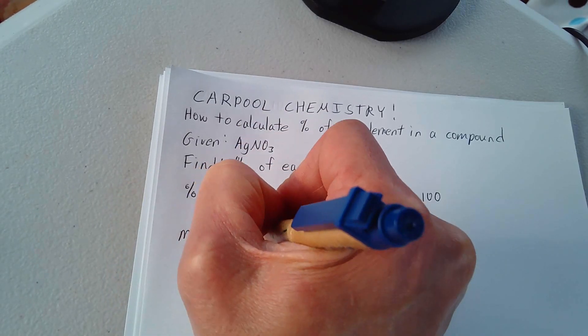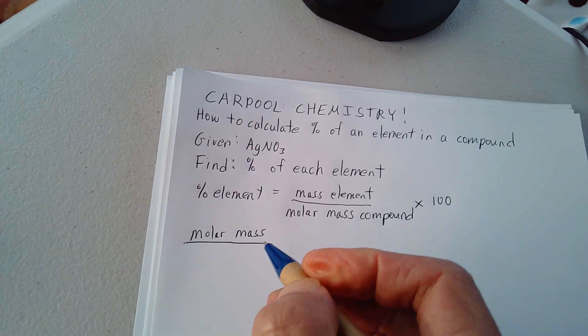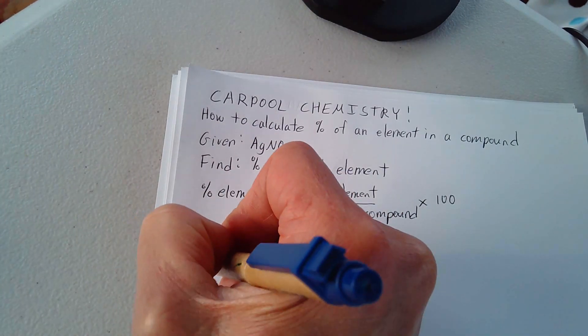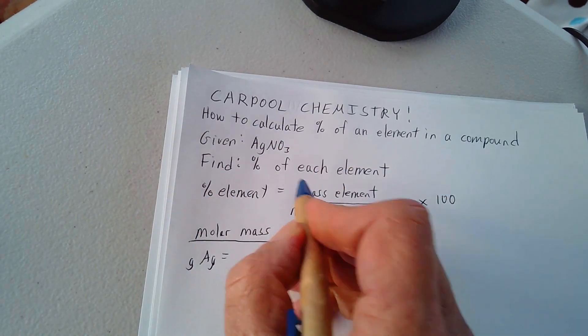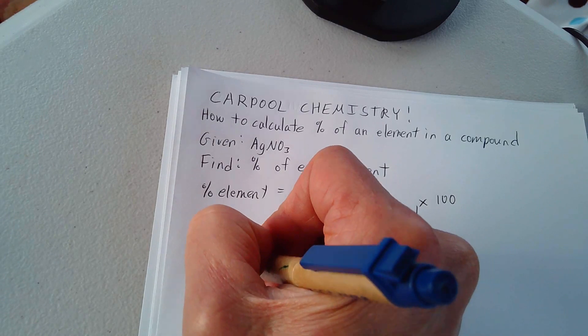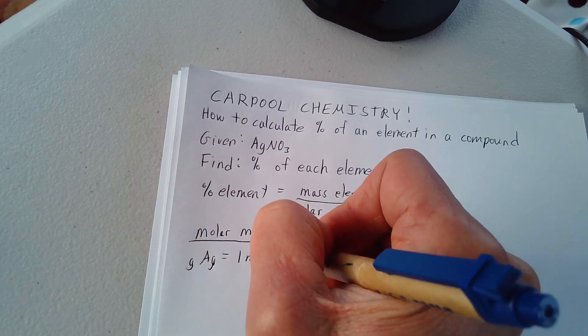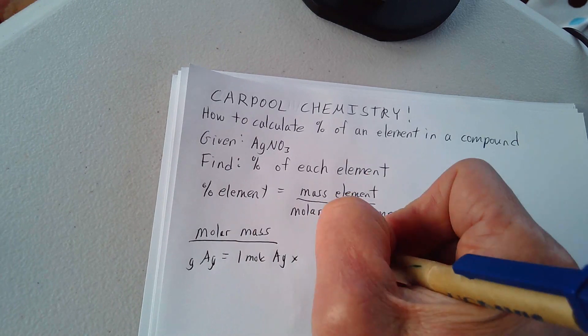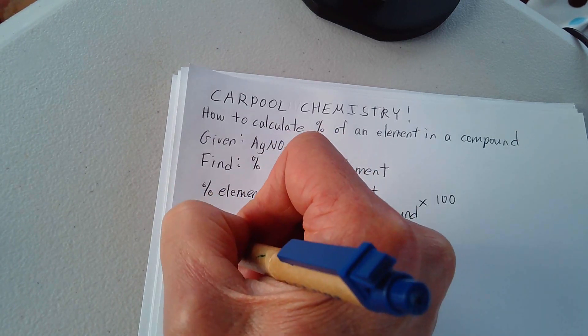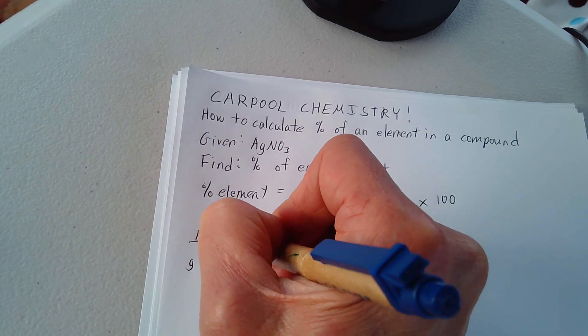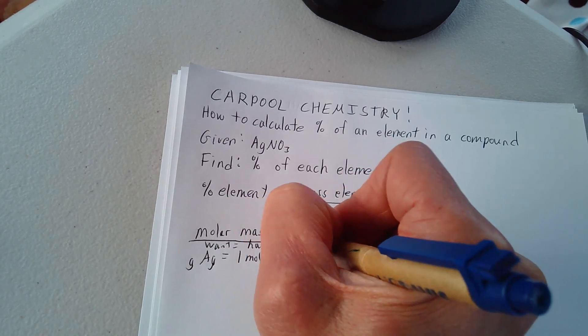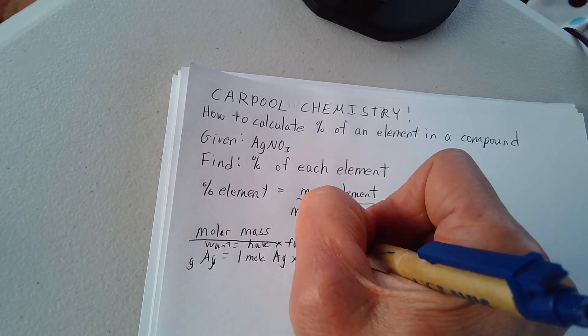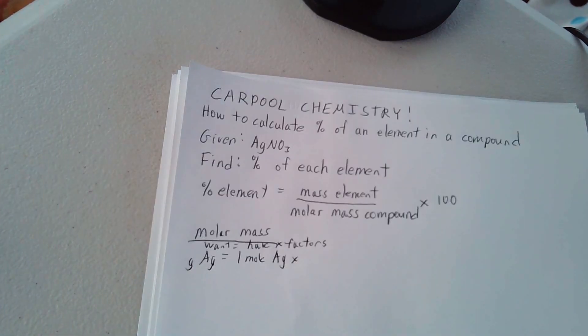Molar mass, and we take the grams of silver is equal to, well, we have one mole of silver in a mole of silver nitrate, times, and of course we're using conversion factors for this, one mole of silver times...